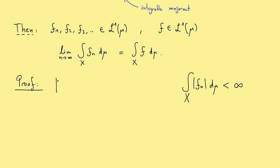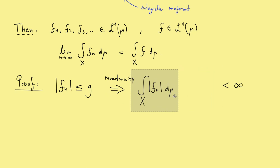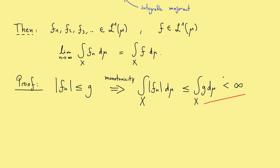Now we can use our assumption: we have an integrable majorant called g. So we have an inequality, and by the monotonicity property of the integral, this inequality carries over to the integral. Putting that on the left, I know this is less than or equal to the integral of g. That right-hand side is our assumption that the integral of g is finite, and therefore we conclude this integral is also finite — meaning all the fn lie in L1.